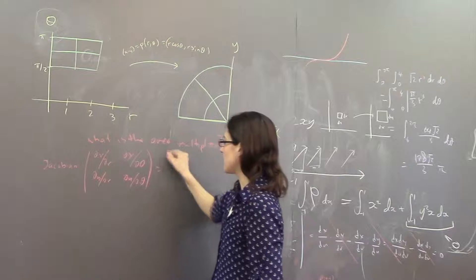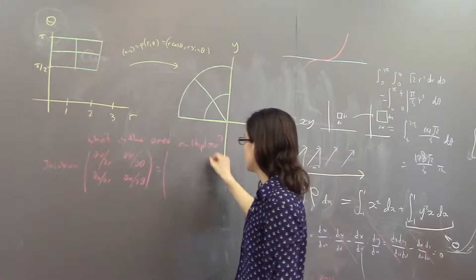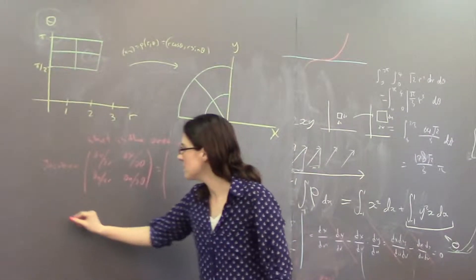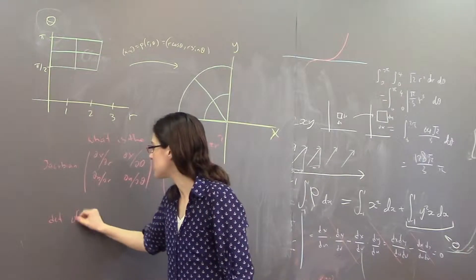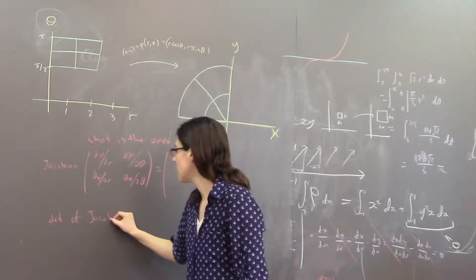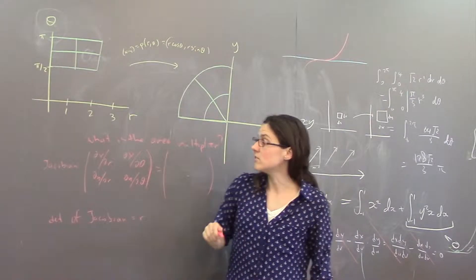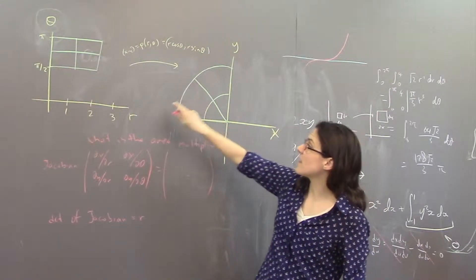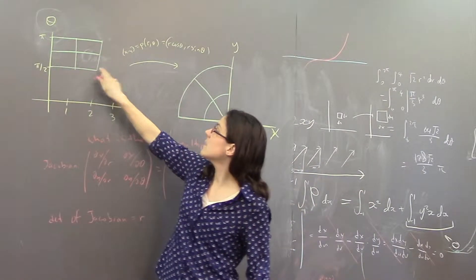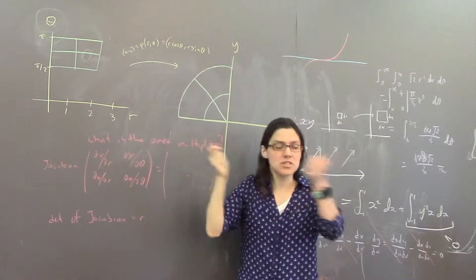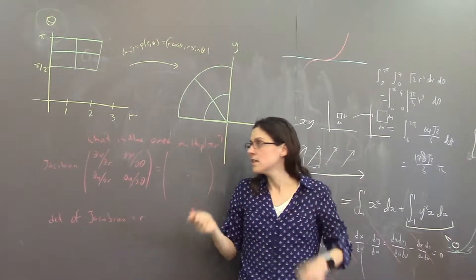We've calculated this before. The determinant of the Jacobian in this case is r. So that tells you that the bigger your r is, the more your region is expanded in area.